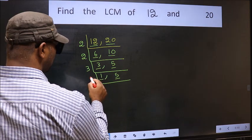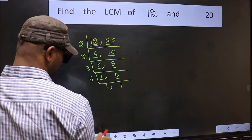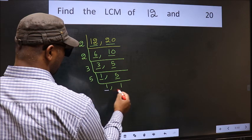5 is a prime number, so 5, 1 is 5. Now we got 1 in both the places.